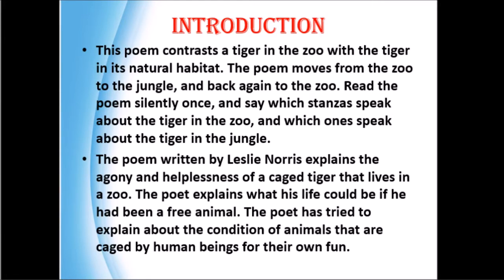The poem is written by Leslie Norris and explains the agony and helplessness of a caged tiger that lives in a zoo. The poet explains what the tiger's life could be if it had been a free animal. The poet has tried to explain about the condition of animals that are caged by human beings for their own fun. 'A Tiger in the Zoo' is written by Leslie Norris.